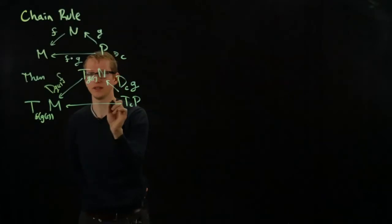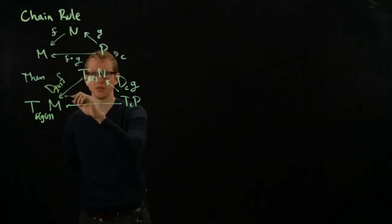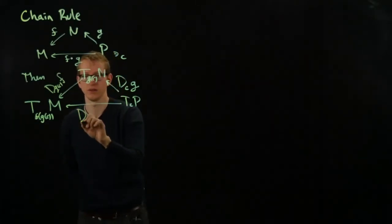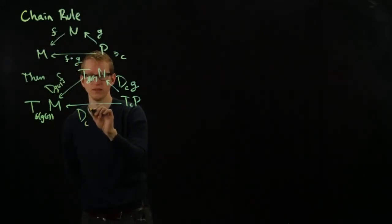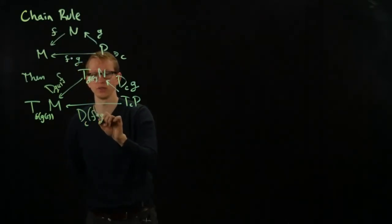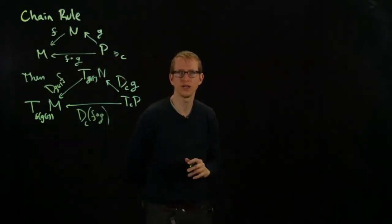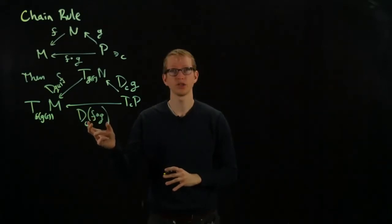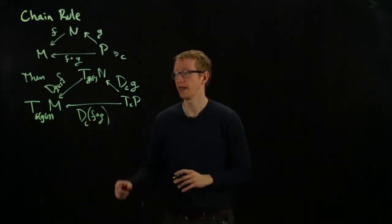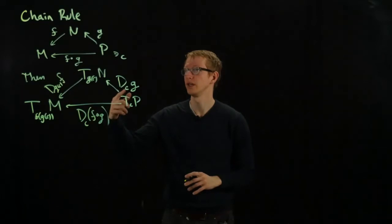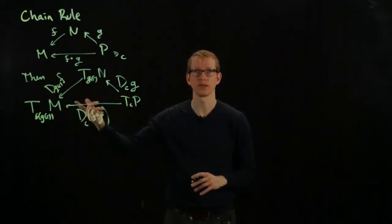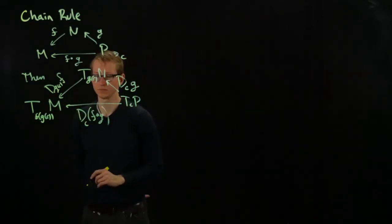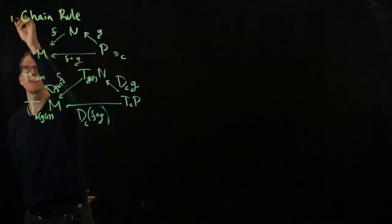And the claim is that this composition equals the differential at the point C of F composed with G. So the chain rule just says that the composition of differentiable functions is differentiable, and its derivative, its differential, is given by the composition of the respective linear transformations. This is one theorem that's true.